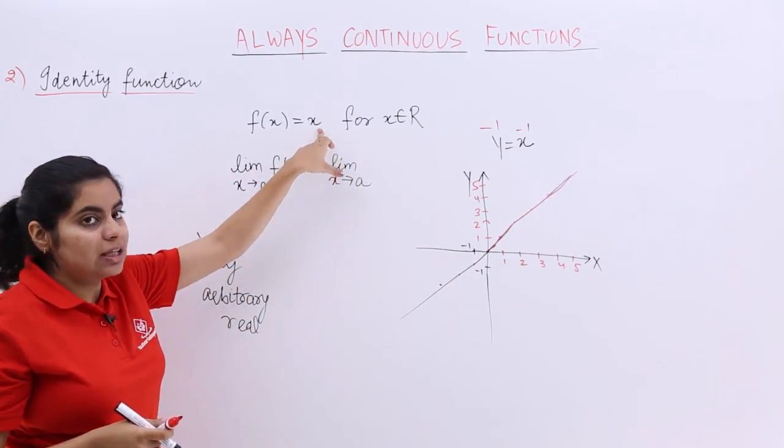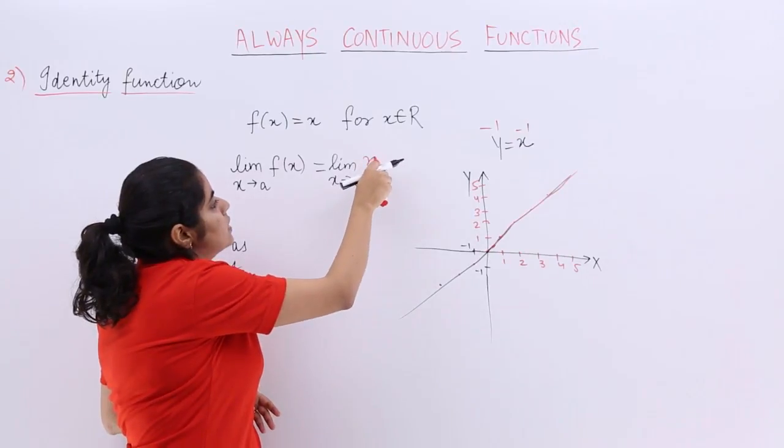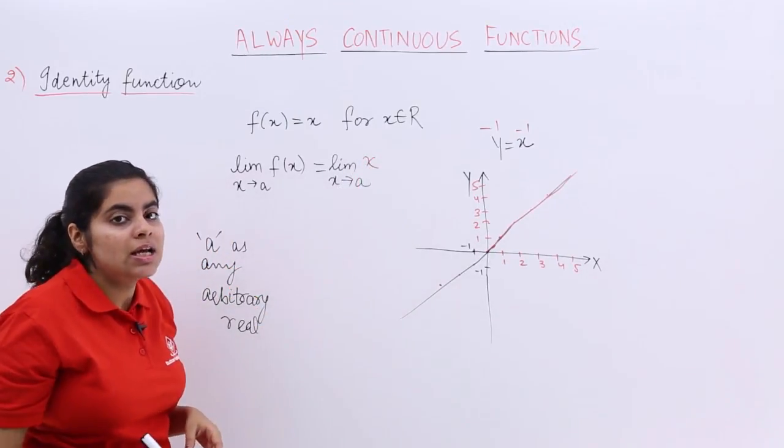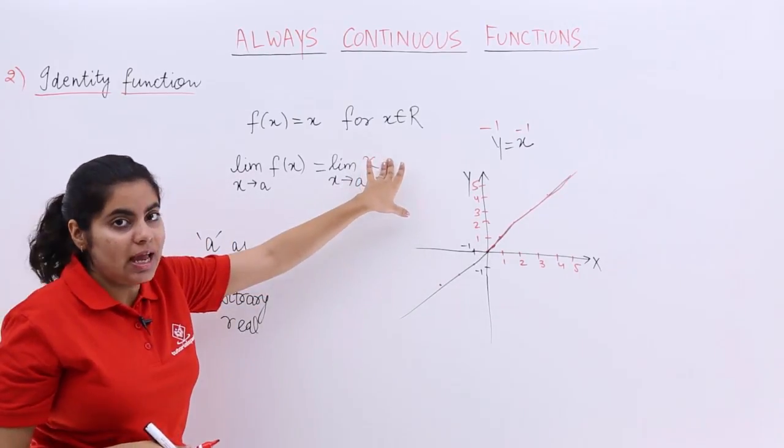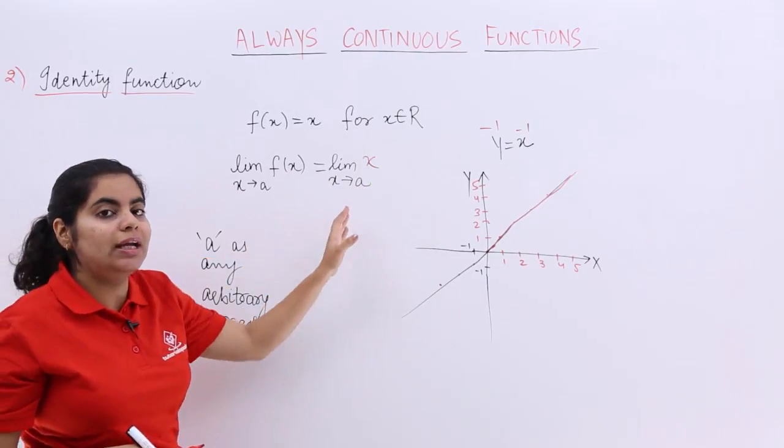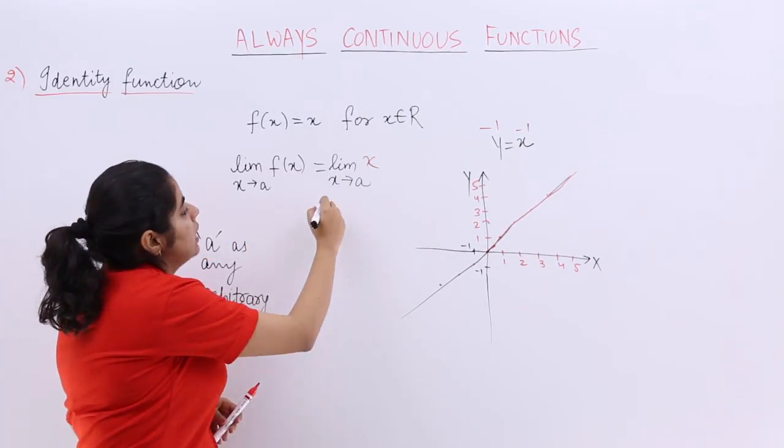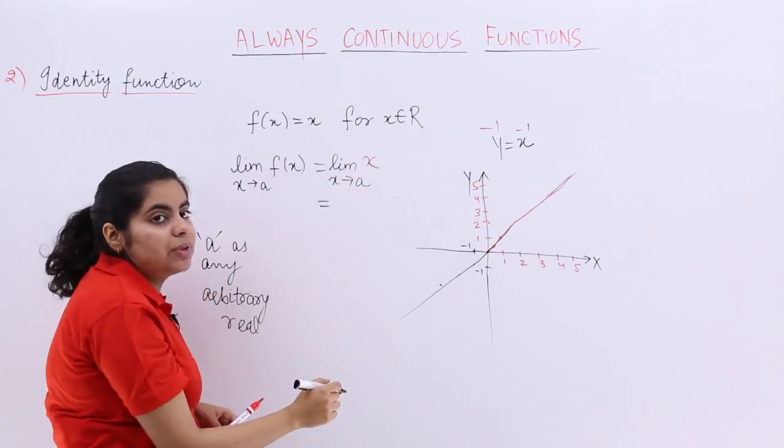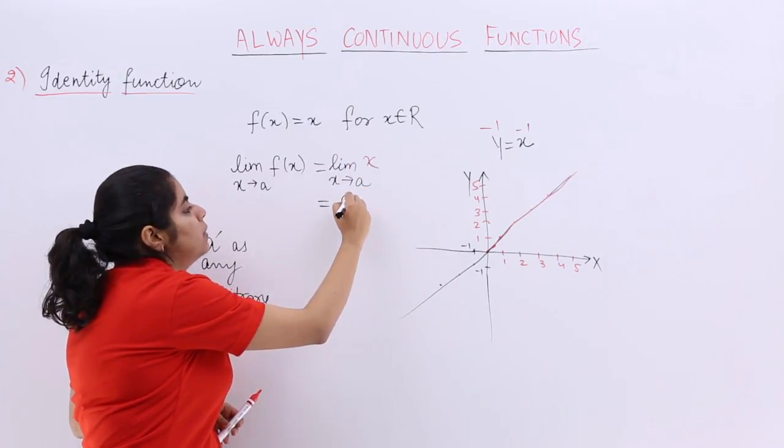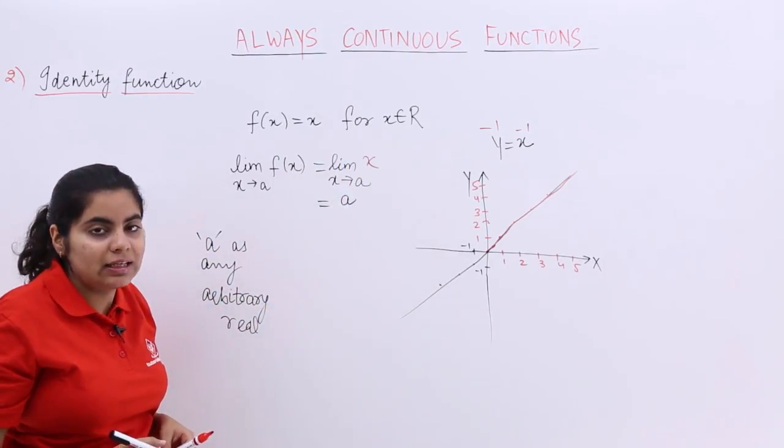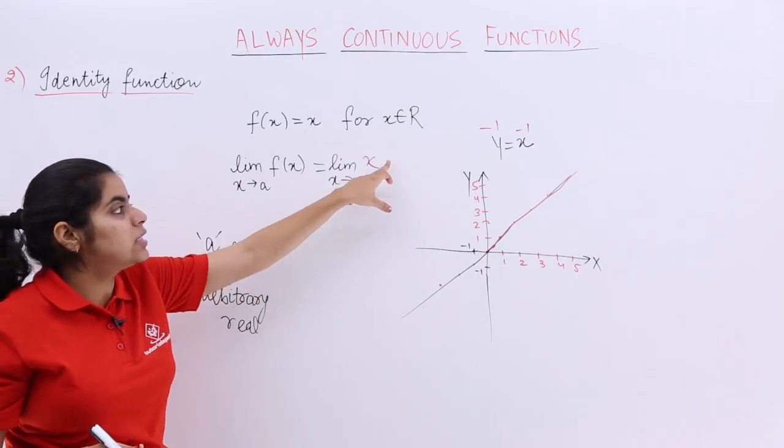So we picked a. Now when you picked a, the limit as x tends to a, what is the value of f(x)? f(x) is nothing but x. You just substitute x here. When x tends to a, I can substitute directly, and my answer would be a.